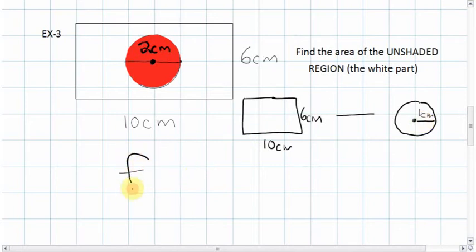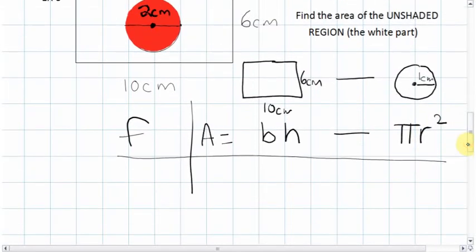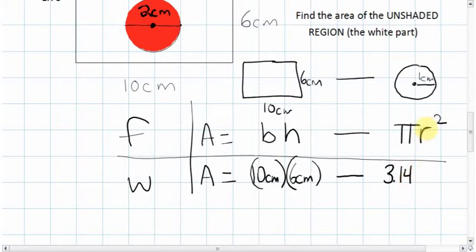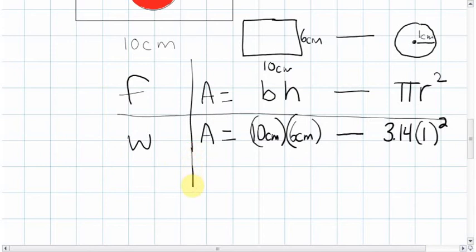Okay, so there's our situation. Let's do the formula. The formula, which is the area of a rectangle, is base times height, minus the area of a circle, which we just did, pi r squared. Okay, now our work. We don't know what the area is. Let's see what A is. Equals the base, which is 10, the height is 6. Subtract pi, which again is always 3.14, and the radius, 1, 1 squared.